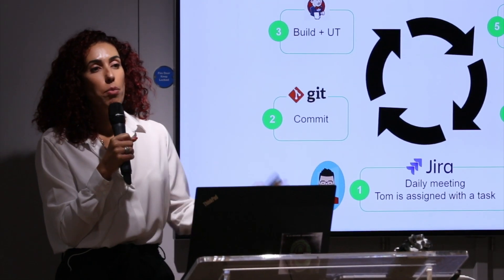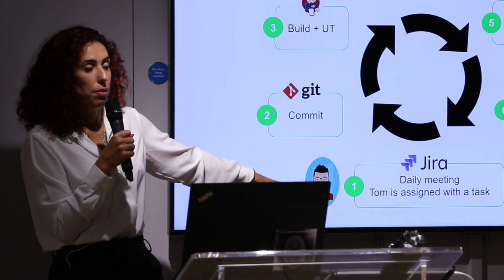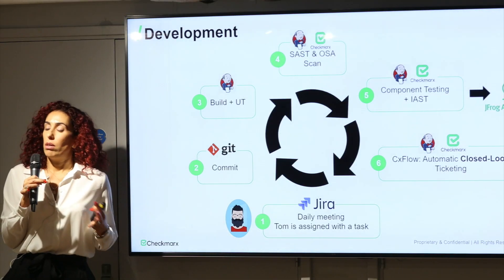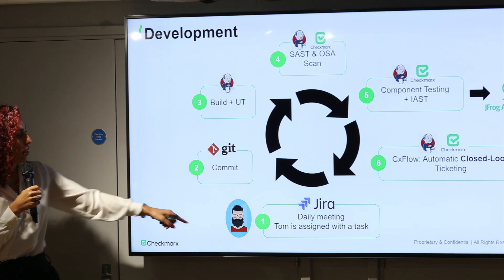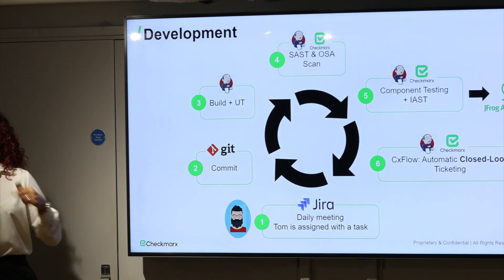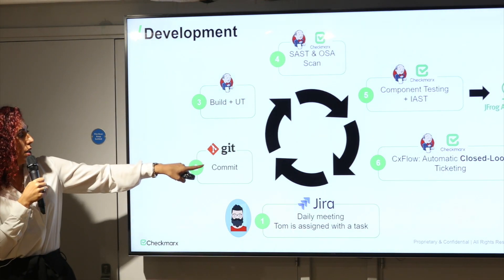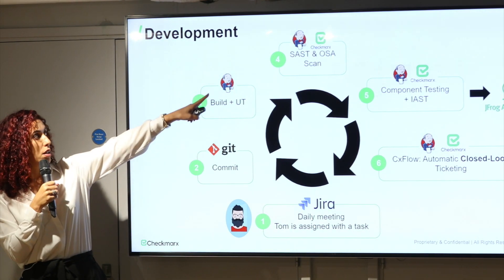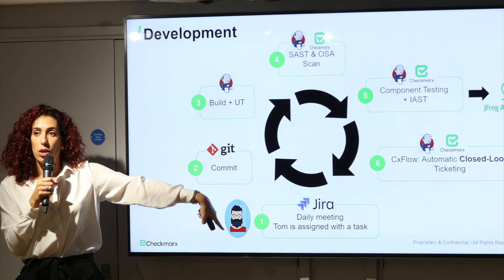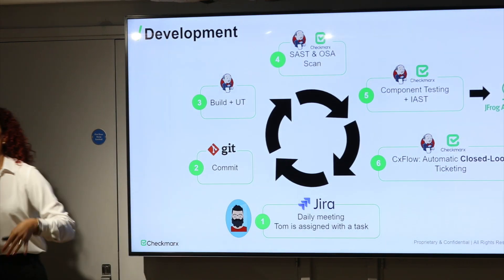The next time Tom opens the backlog, he sees the bug. It doesn't require him to open a separate report or portal — it's simply there. Tom is a responsible developer, so he notices the bug, commits the fix. The next scan will not find the issue, and CxFlow will close the ticket. The loop is closed.